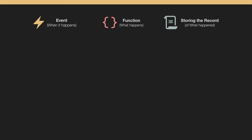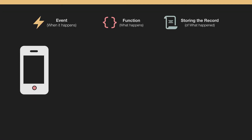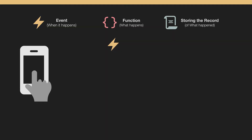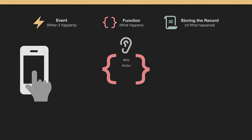We'll talk about that in a second. The last part is really storing that event into some type of database, which is usually called a learning record store, or LRS. In this example, a learner pulls up their mobile phone and interacts with something — they tap on something. That tap is an event that triggers a function listening for it. As soon as it hears the event, it captures the event and who the person is that did it — what action did they do? Did they tap on it? Did they complete a video? Did they download something?